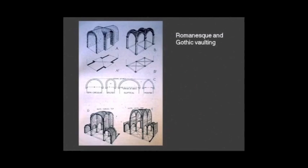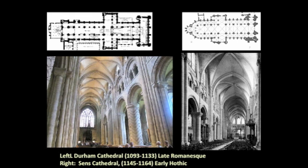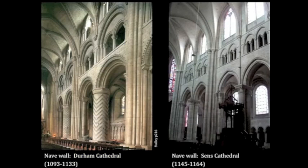Let's look at a comparison between walls. This is Durham Cathedral — fairly late and highly developed Romanesque. And this is Senlis Cathedral in France, south of Paris, which is a fairly early example of Gothic. In Durham Cathedral, we have rounded Roman arches, which were popular in the Romanesque period. And in the Senlis Cathedral, we have pointed arches.